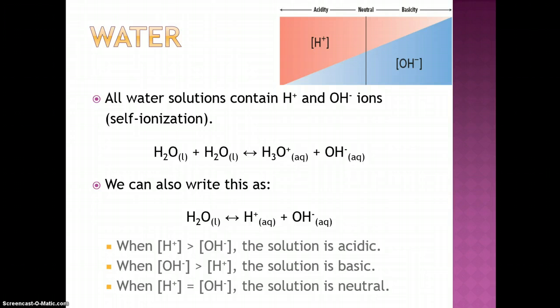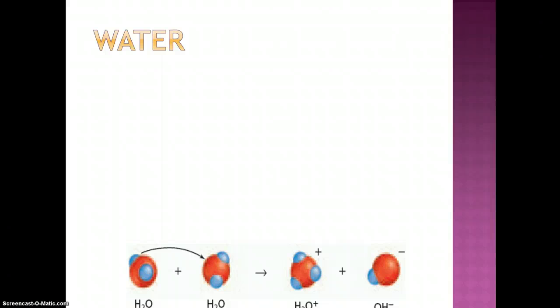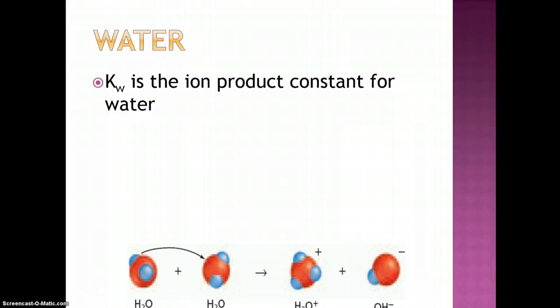Pure water produces equal numbers of hydrogen ions and hydroxide ions in a process called self-ionization. Because of this self-ionization, we can set up an equilibrium expression, and this allows us to calculate the K of water, which is called the ion product constant of water.